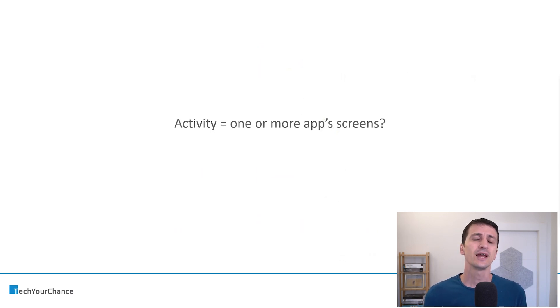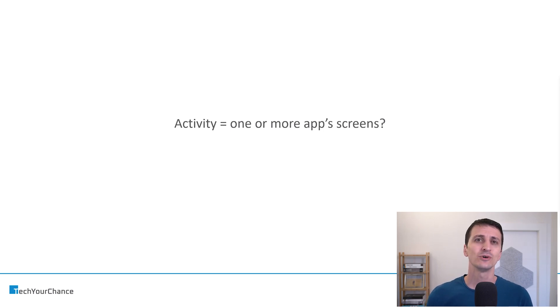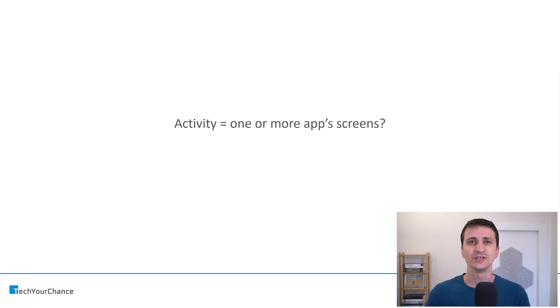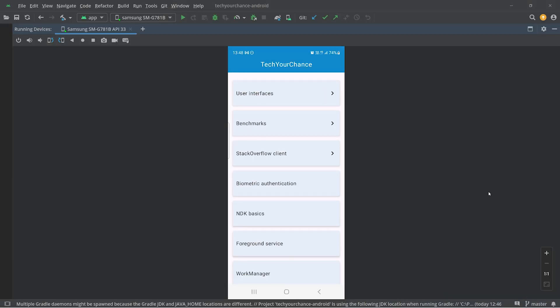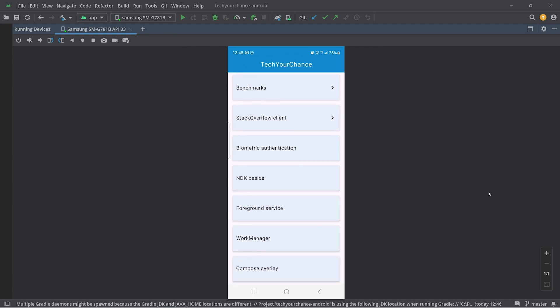The question becomes: can we define activity as one or more application screens? To answer this, I'd like to show a short demonstration of something not many Android developers are aware of — how Android represents its user interface stack. Let's jump into Android Studio. Here I'm using one of the relatively recent additions — the ability to mirror my physical device into an emulator-style UI. What you see on screen is what I'm doing on my device. This is my open source Tech Your Chance application; I'll post a link in the description.